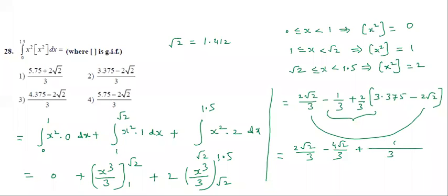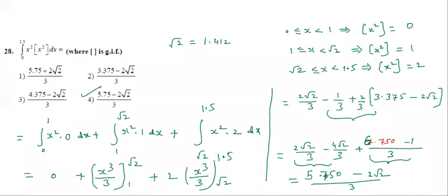So here you are getting 7.050, 1. See the calculation: 2 times 3.375 and this is minus 1. Minus 1. See the options. Somewhere we are done mistake calculation. So 2 times 3.75, 6.750 minus 1, that is 5.750. Here 2 root 2 by 3 minus 4 root 2 by 3, minus 2 root 2 by 3. This is the final answer. Fourth option is correct. Got it?